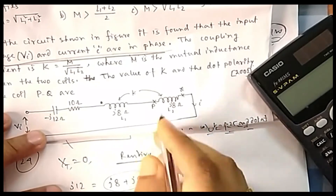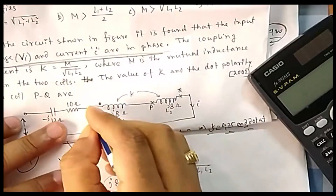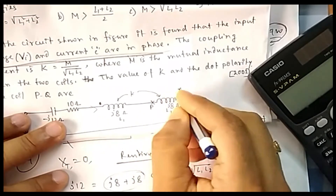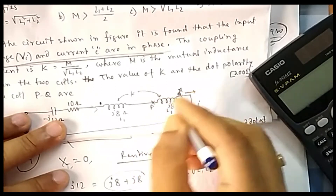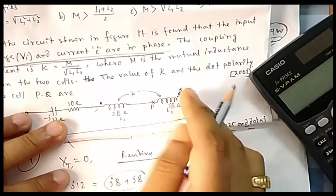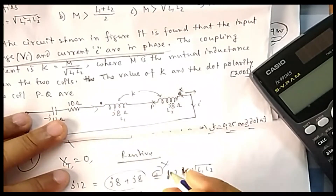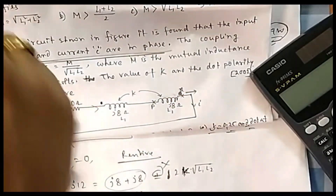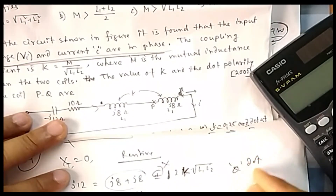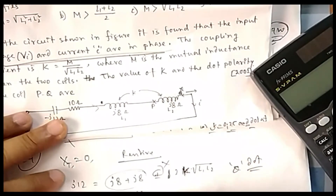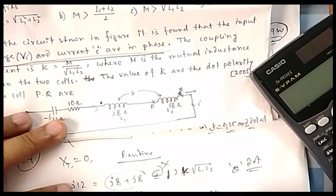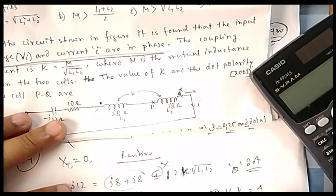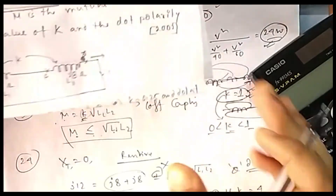When the mutual inductance term is negative, by dot convention, current entering through one dot must leave through the other. So the dot is placed at terminal Q. Now solving: 12 = 2·k·√(L1·L2), and since L1 = L2, we get 12 = 2·k·L = 2·k·8, giving k = 12/16·... ultimately k = 0.25. The answer is option C: k = 0.25 with dot at Q.